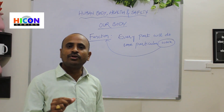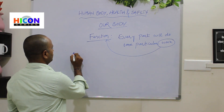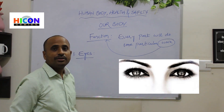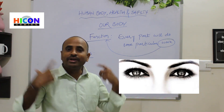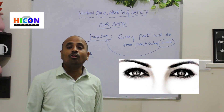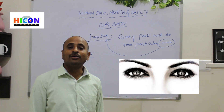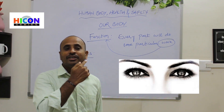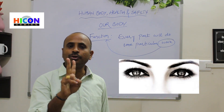First, we will discuss about the function of eyes. So children, where are the eyes located in our body? They are in the head. We have two eyes. Eyes are located in the front part of our head, that means in our face. Our face contains two eyes.